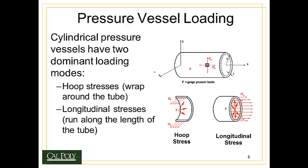So how do pressure vessels get loaded? If we imagine a cylindrical pressure vessel — a good approximation for many types — there are two dominant loading modes, or stress directions. There are hoop stresses which wrap around the pressure vessel in the circumferential direction, and there are longitudinal stresses which act along the length of the cylinder. We have hoop stresses going in the vertical direction, and longitudinal stresses going in the horizontal direction.